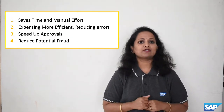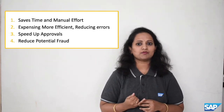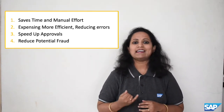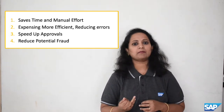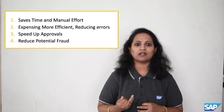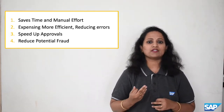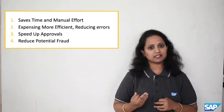Amazon Business Integration gives the capability of expensing Amazon Business transactions automatically. The benefits this integration brings to customers are: 1. Saves a lot of time and effort required to manually bring receipts from Amazon Business purchases. 2. Makes expensing purchases more efficient, thereby reducing errors and manual intervention.